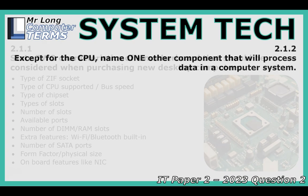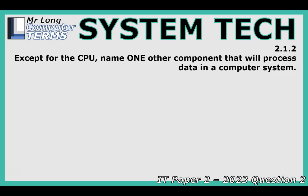The CPU is the main brain, but the GPU — graphics processing unit — also processes data. It's specialized for visual tasks: rendering images, videos, animations, and making your desktop look smooth, taking that load off the main CPU. Even for design software or high-res displays in an admin building, a decent GPU helps things run smoother visually and frees up the CPU for other tasks.